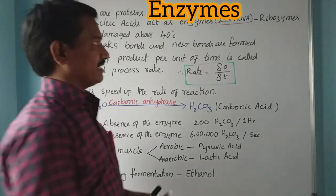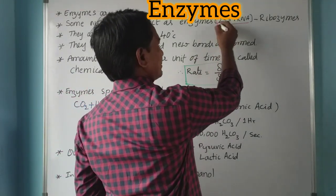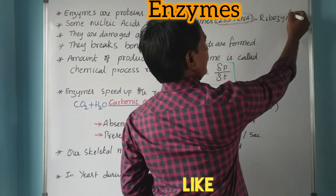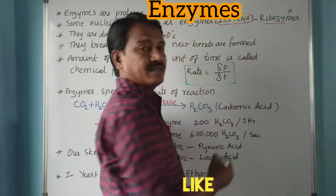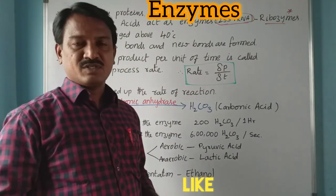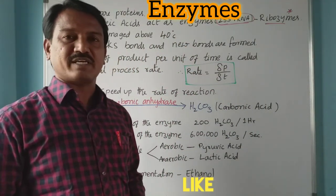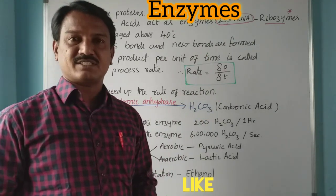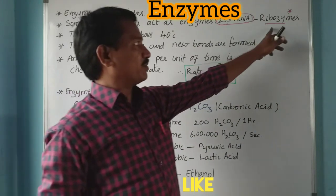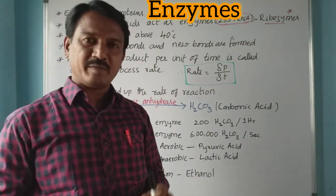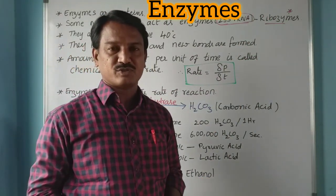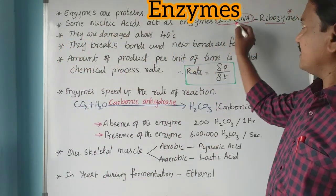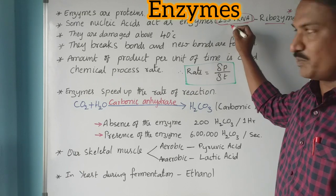The 23S ribosomal RNA acts as an enzyme, and that type of enzyme is called a ribozyme. A ribozyme is a nucleic acid that performs catalysis. The example here is 23S ribosomal RNA.